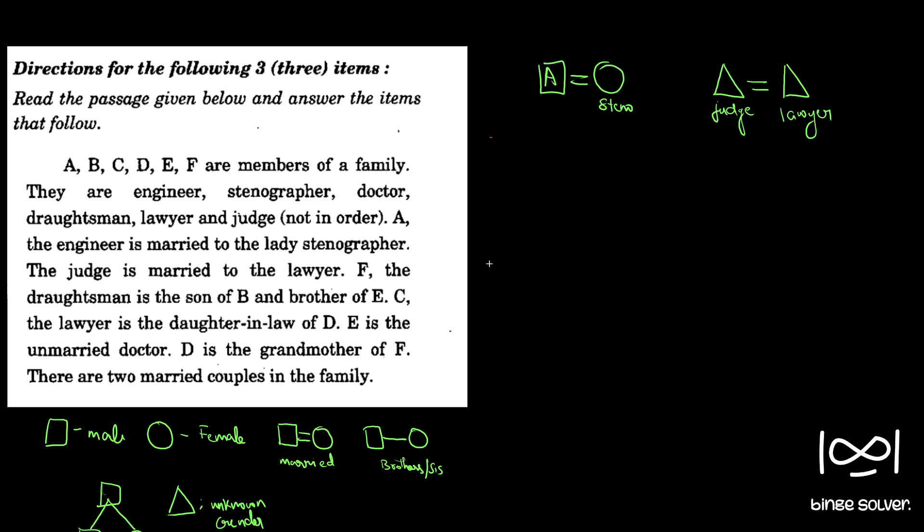Then F, the draughtsman, is a son of B and brother of E. So we know that F is a male person, son of B and brother of E. They are linked like this. This is brother relationship and this is parent-child relation. We don't know the gender of B and E yet.